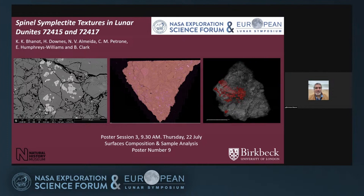This study investigates spinel symplectites in lunar dunite samples collected by the Apollo 17 astronauts. Micro CT imaging has established the three-dimensional texture of the symplectites, which are intergrowths of spinel and other minerals. The host dunites are brecciated, and shock features indicate they experienced shock pressures on the order of 50 gigapascals. Four types of spinel symplectites have been identified, varying in size, mineral associations, and spinel composition. Based on texture and mineral chemistry, we propose that the four symplectite types have different origins.